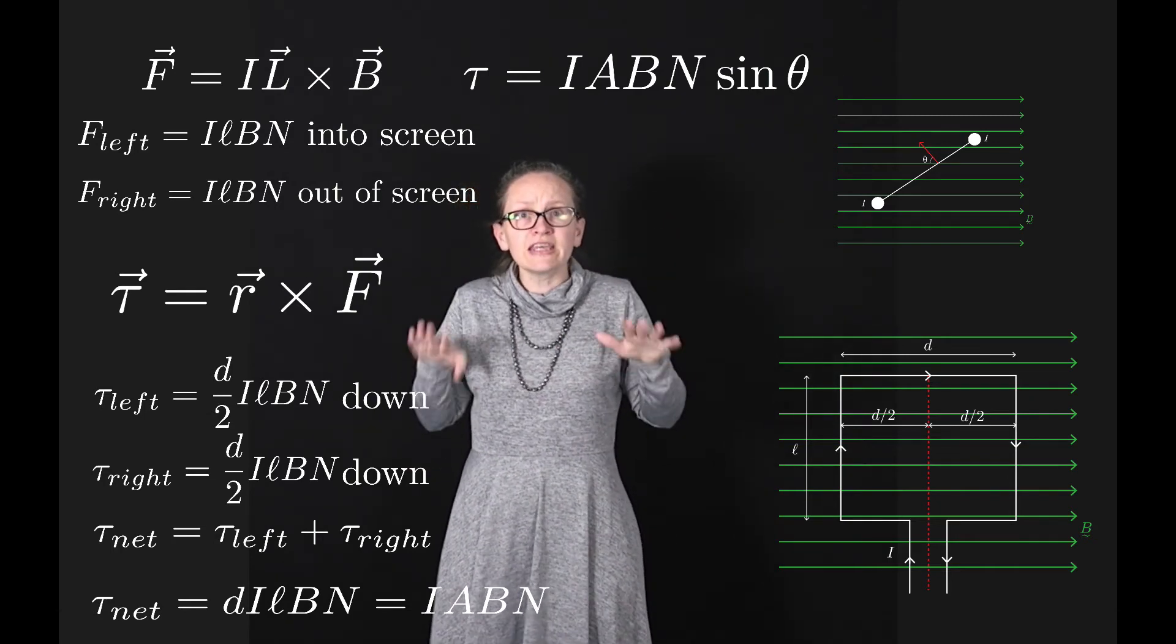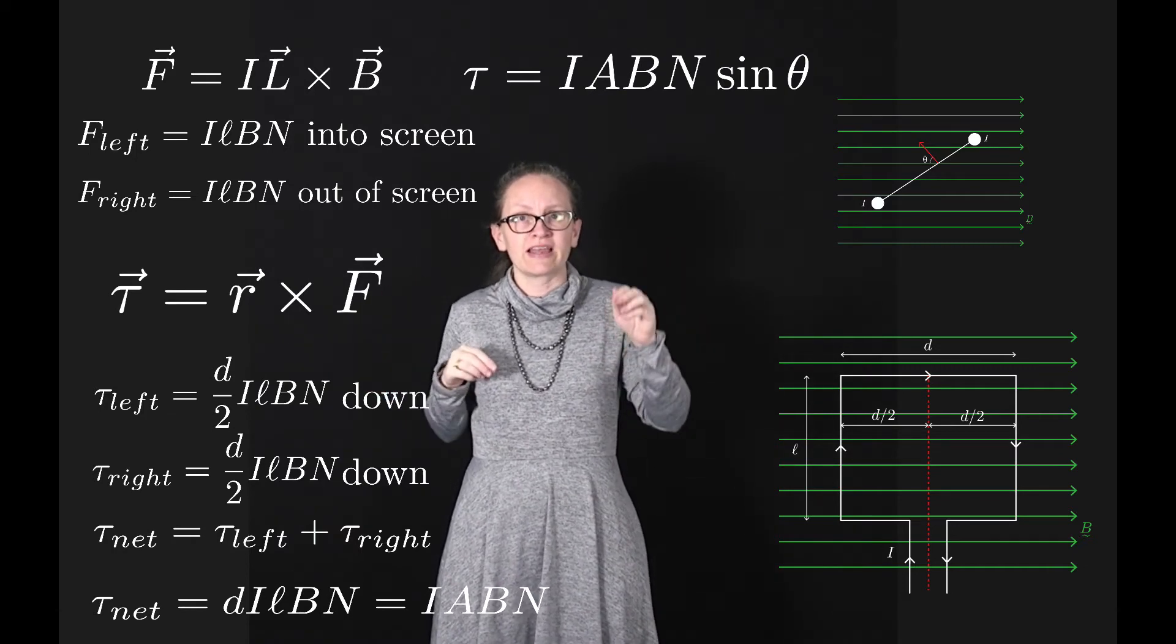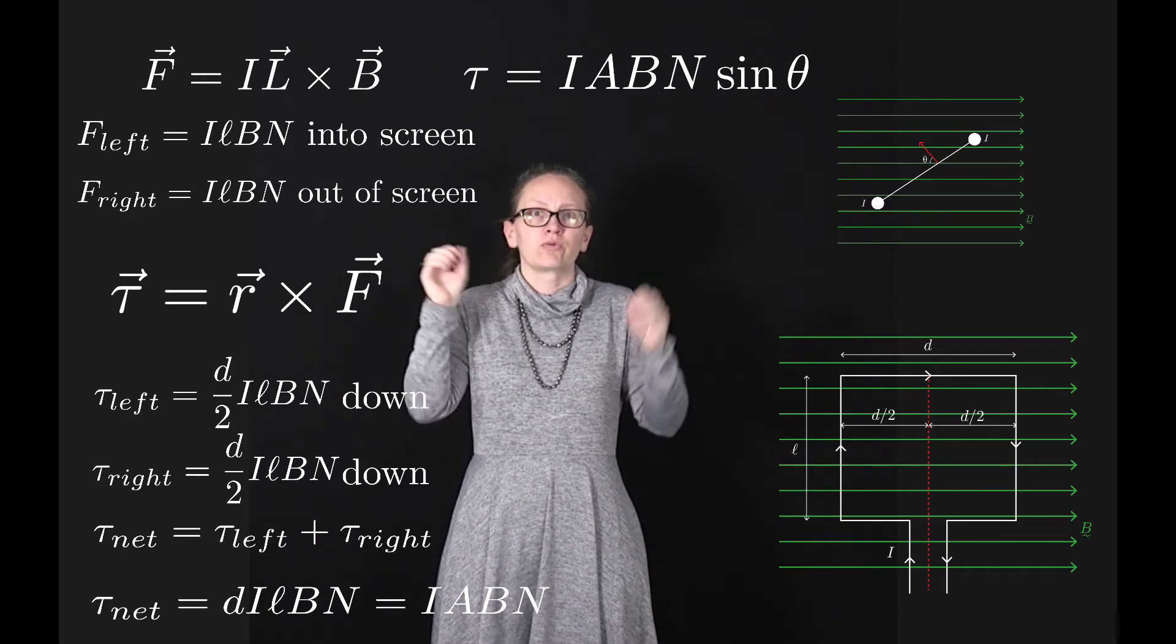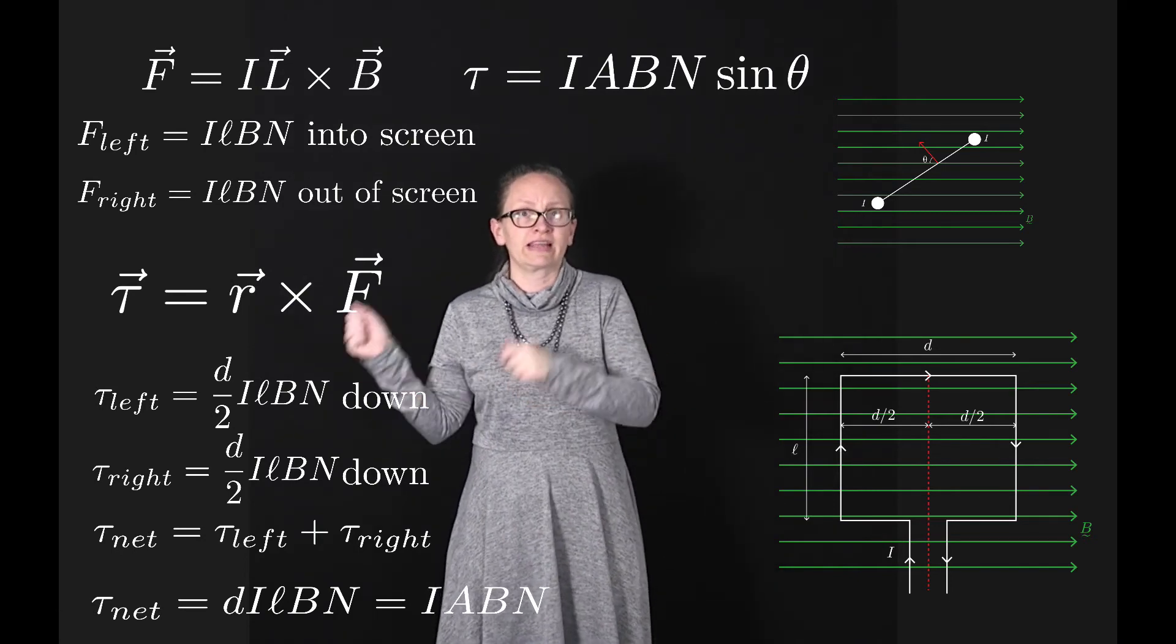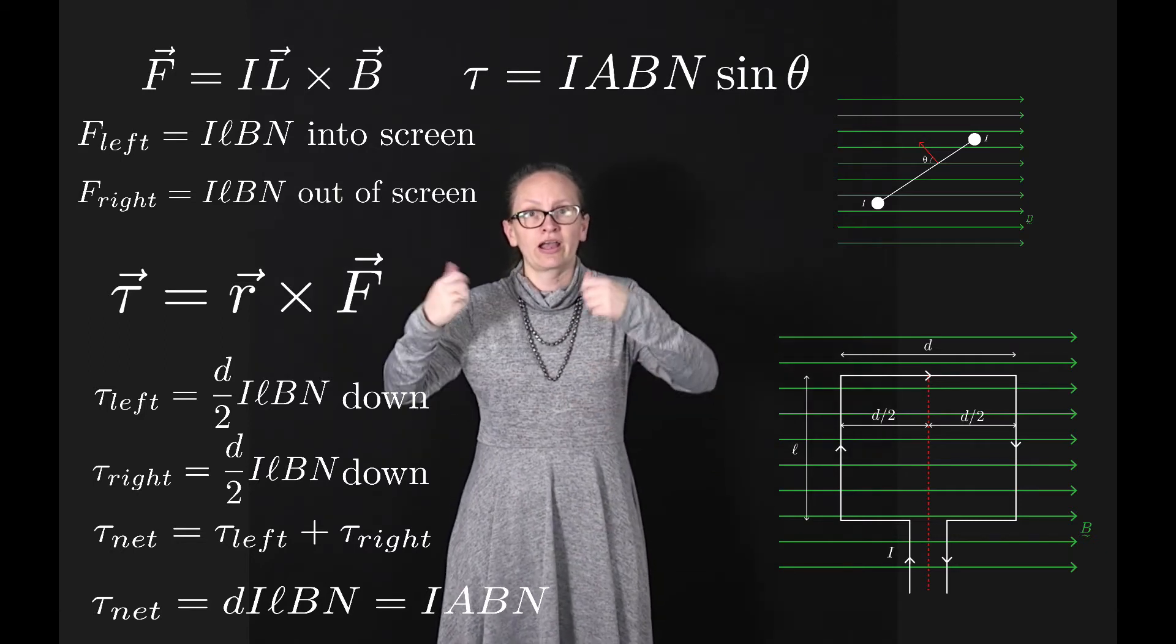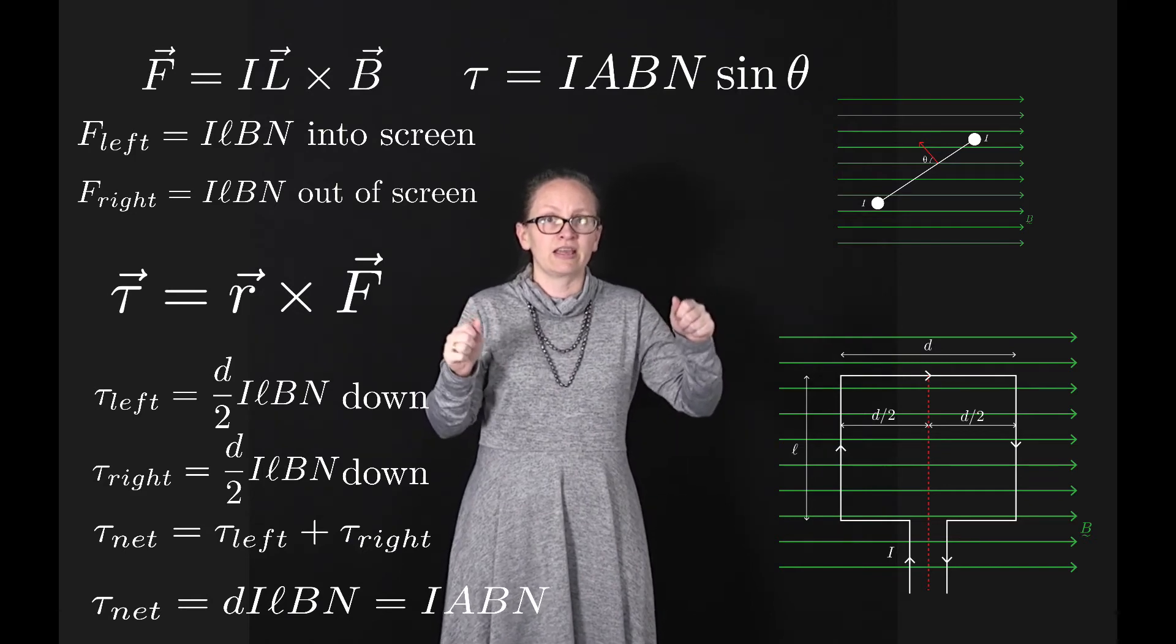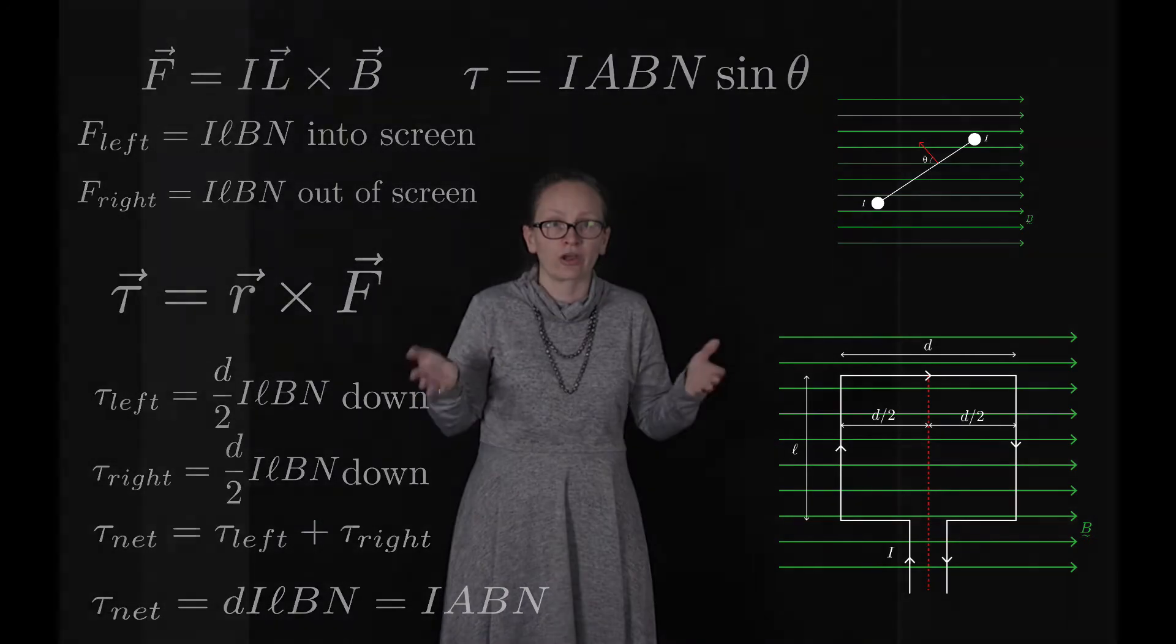This is essentially how motors work. We send a current through a coil of wire, and this causes a net torque which starts that coil rotating. Electric motors convert electrical energy into mechanical energy. The current flowing through the loop is converted into kinetic energy as the loop starts to turn.